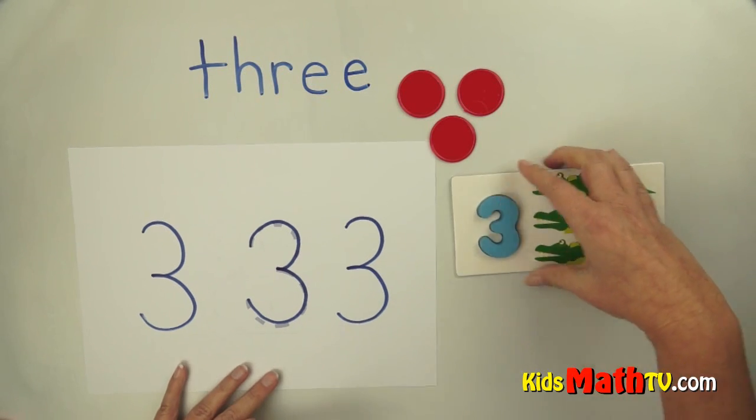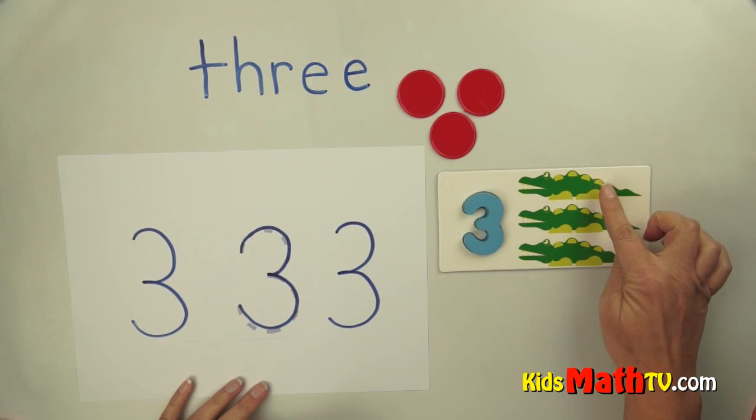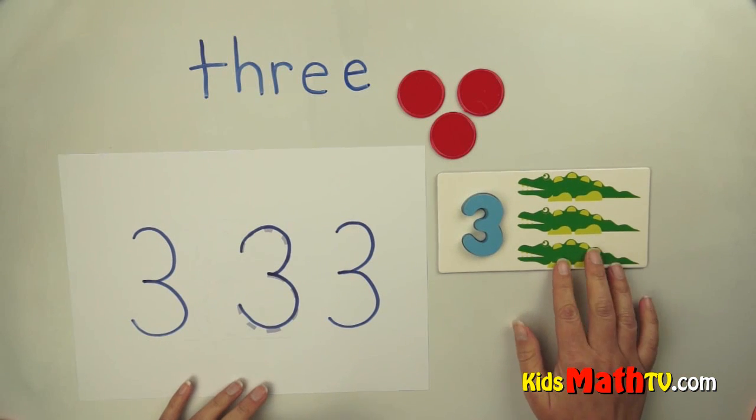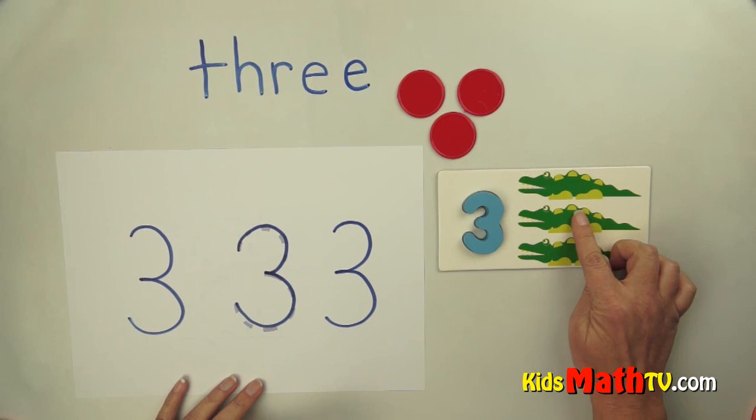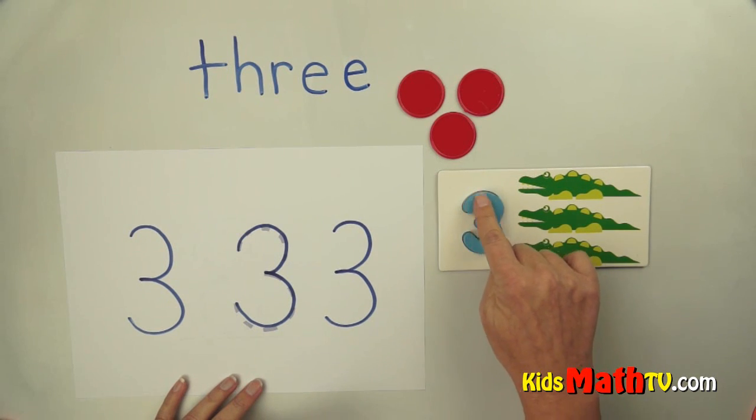Here's another example of three. Here we have three crocodiles or alligators. I don't know which. One, two, three. The number three.